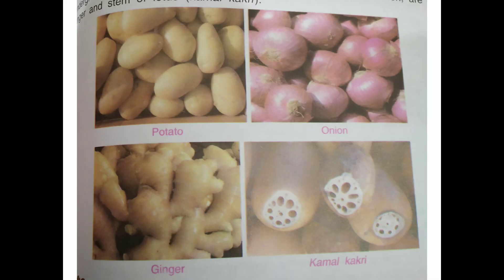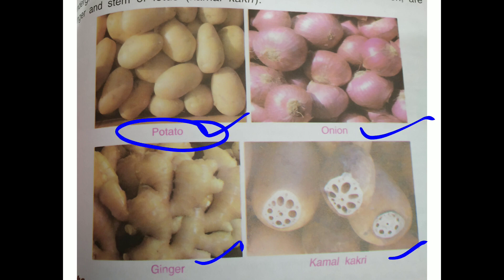Now see this — potato, onion, ginger, and the stem of lotus called kamal kakadi. These are the examples of stems. When you have to draw a diagram of an underground stem, you can draw the potato, ginger or onion.